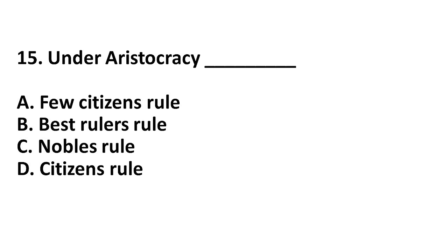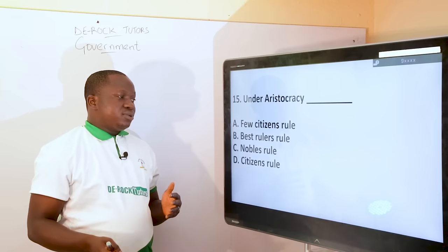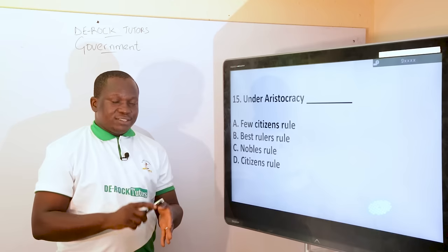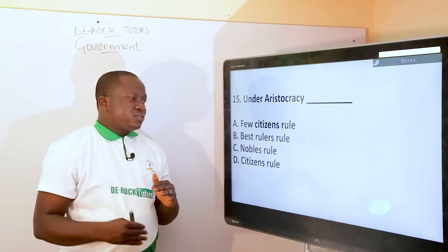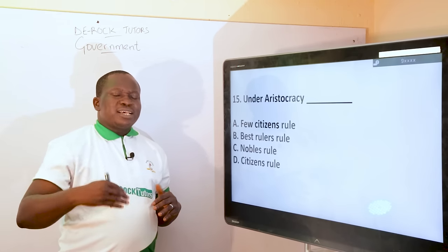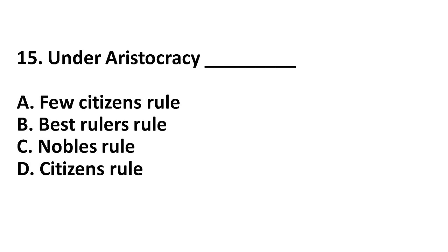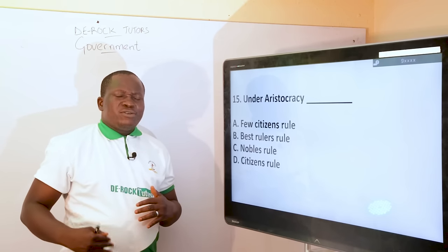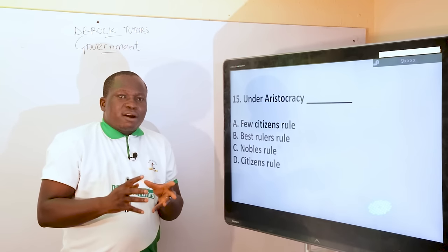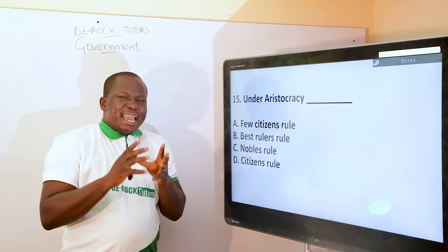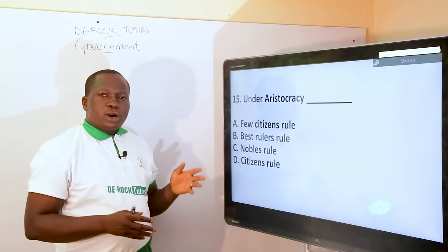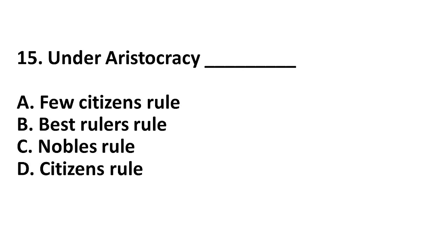Next question: under aristocracy. Option A says few citizens rule — few citizens rule under plutocracy, theocracy, gerontocracy, militocracy, and kakistocracy too, so that is not specific to aristocracy. Option B says best rulers rule — it is not even about best rulers; it is about the best of the citizens, the nobles, the educated persons, those categorized as aristocrats in the society, people at the upper echelon of society, the gifted and most intelligent persons, the philosophers. The correct answer is that under aristocracy, nobles rule.